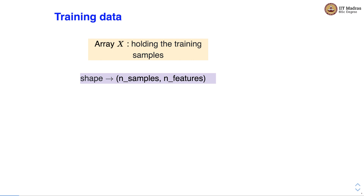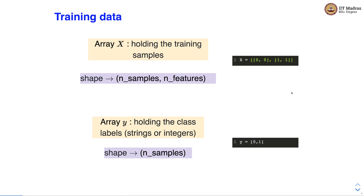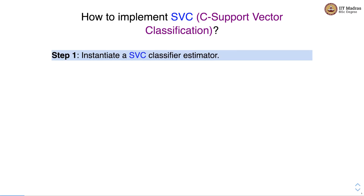The training data has two components: the training samples, or feature matrix X, which has the shape of number of samples by number of features. For example, the first sample has two features set to 0,0 and the second has two features set to 1,1. We also have Y, which holds the class labels and has the shape of number of samples — a vector. In this case, Y is 0 for the first example and 1 for the second.